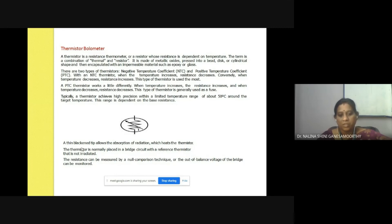Look at the diagram of this construction. A thick blackened tip allows the absorption of radiation which heats the thermistor. When the thermistor is placed in a bridge circuit arrangement, whenever the temperature rises, the unbalance of the bridge is detected.